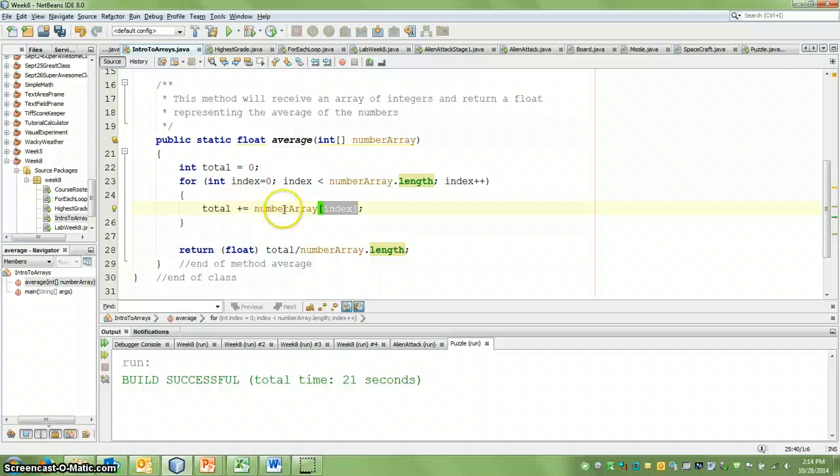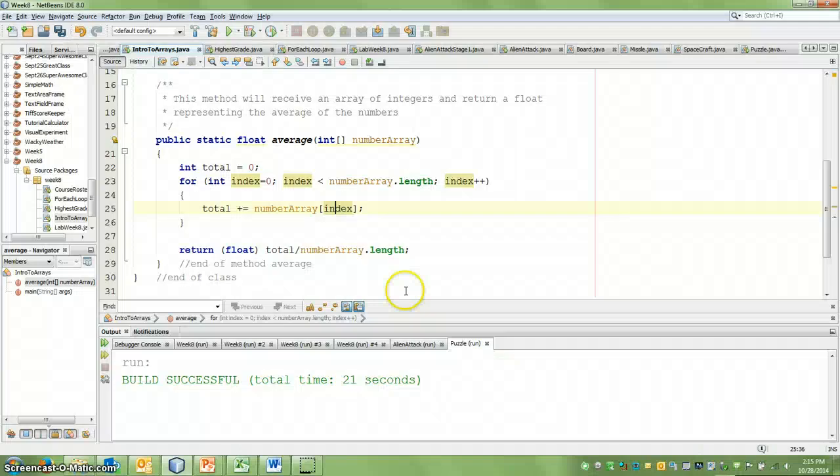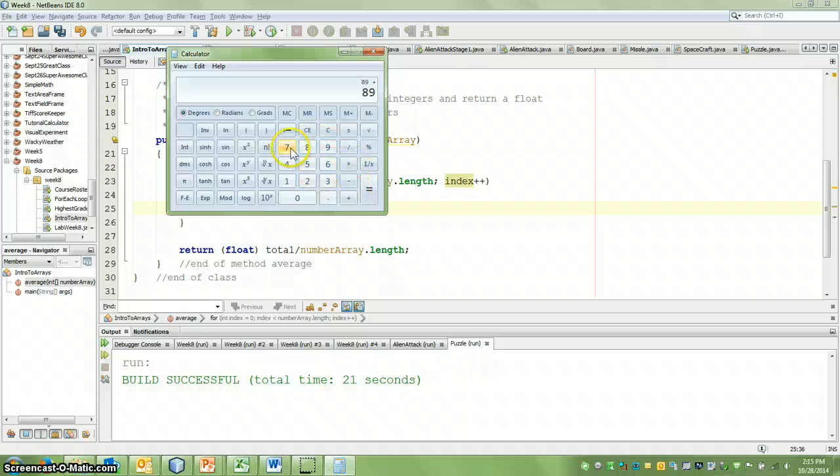And then that index counter here is going to go up by one. So it's going to check, is one less than four? Well, that's true. So it's going to go into our loop, and it's going to say 89 plus equals, and it's going to say the number array at position one, which is going to be 78 in this case. So we're now at, if we bring up our calculator here, it's like saying 89 plus 78. So now we're at 167.